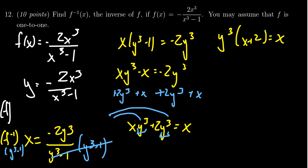Next we need to get rid of the so-called coefficient of the y cubed, that is divide both sides by x plus 2. So we end up with y cubed equals x over x plus 2.